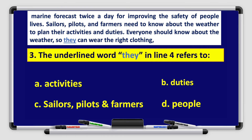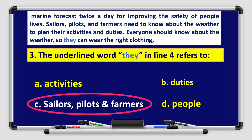Third question: the underlined word 'they' in line 4 refers to A. Activities, B. Duties, C. Sailors, Pilots, and Farmers, or D. People. Sailors, pilots, and farmers need to know about the weather to plan their activities and duties. Everyone should know about the weather so they can wear the right clothing. The underlined word 'they' refers to Sailors, Pilots, and Farmers.